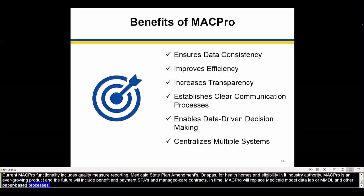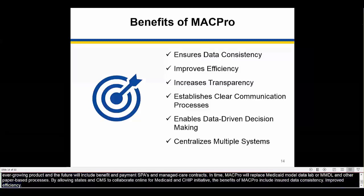By allowing states and CMS to collaborate online for Medicaid and CHIP initiatives, the benefits of MACPro include ensuring data consistency, improved efficiency, increased transparency, established clear communication processes, enabled data-driven decision-making, and a centralization of multiple reporting systems.